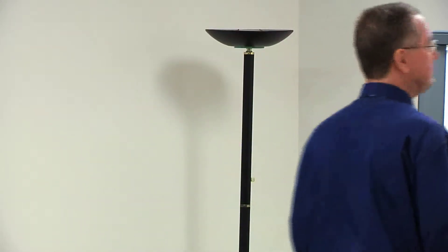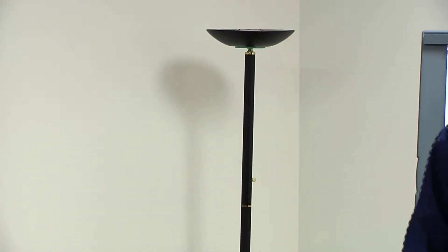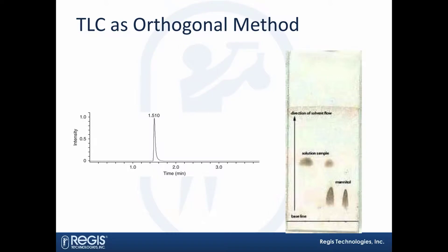Here's an example — I actually have real data in this talk right now. This is an HPLC chromatogram showing one component, and the middle lane of the thin layer chromatogram shows that there are two components. So that's just an example of something you could have missed.